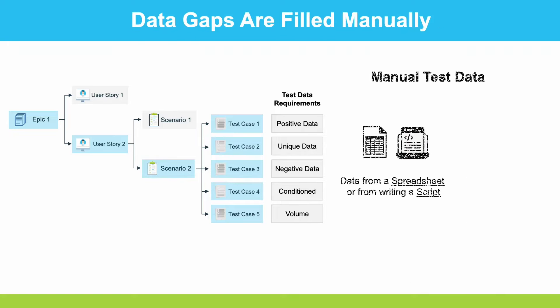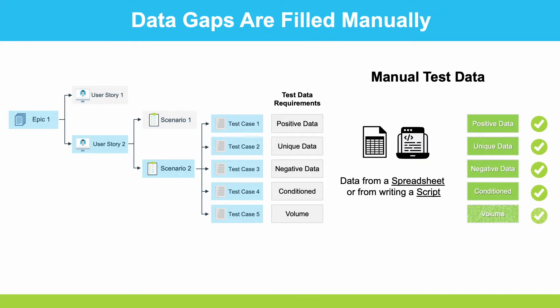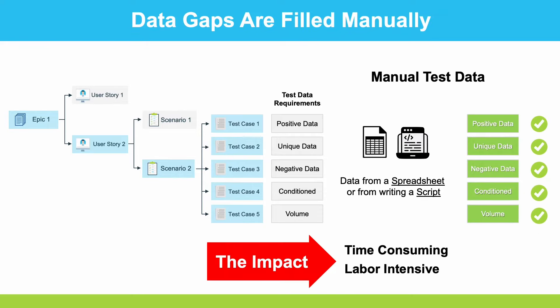So what does the marketplace do? It goes to the front end to enter data, or creates a spreadsheet or writes a script — that can help cover some gaps. But the problem is this is very time-consuming and labor-intensive. It just doesn't scale. Manually creating data for test automation just doesn't make sense.